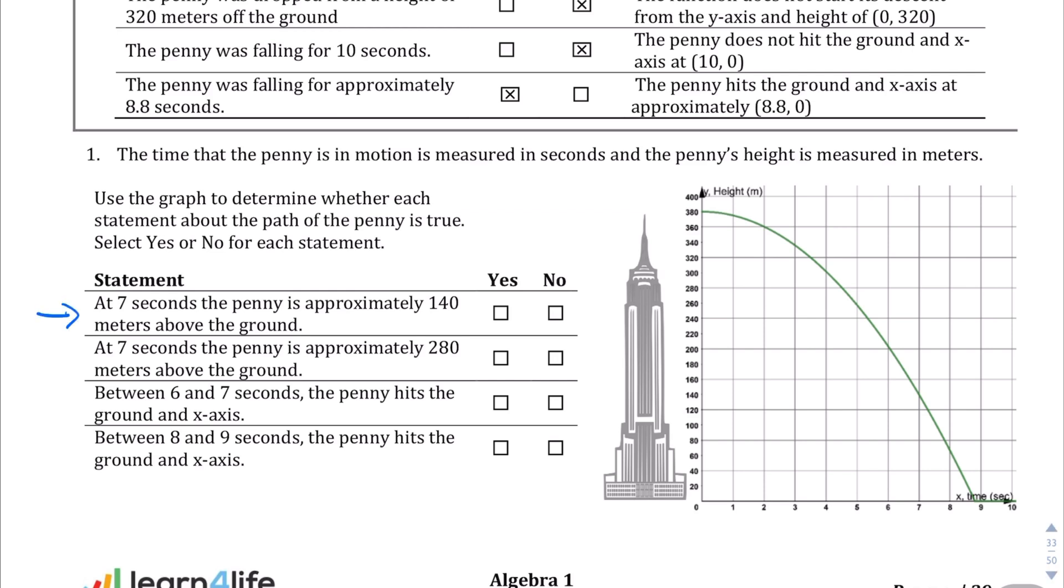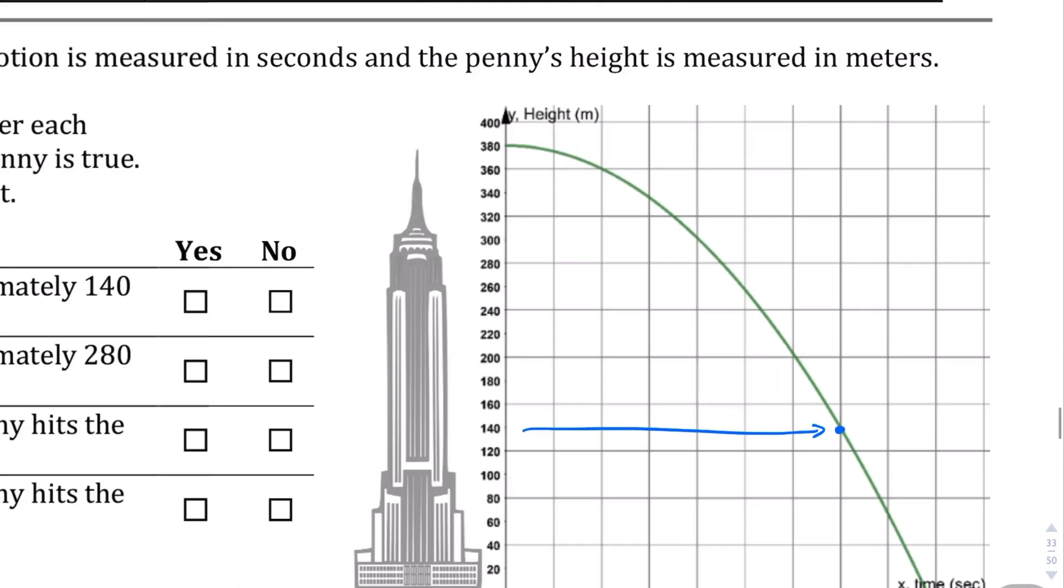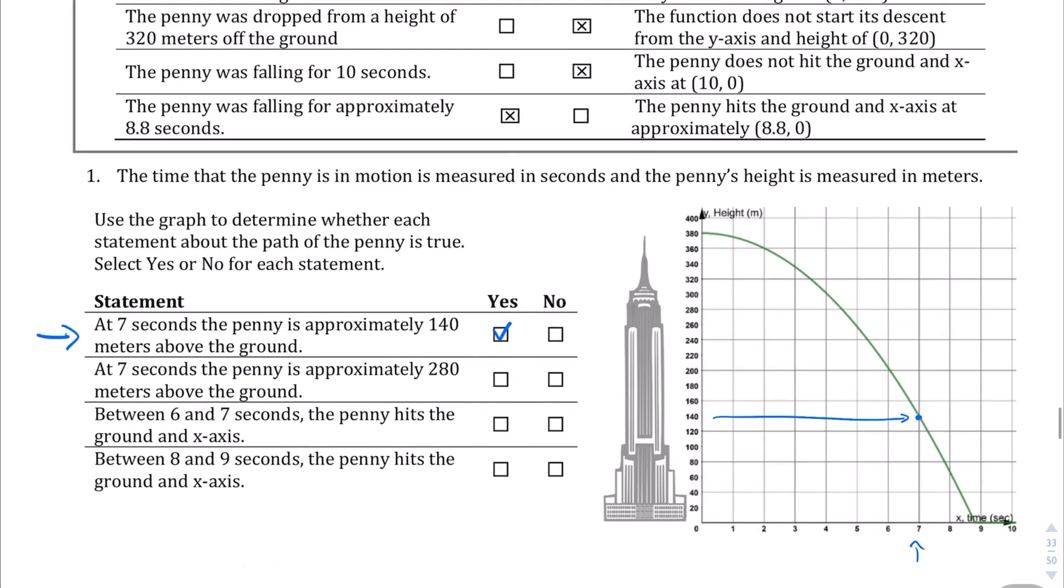Let's take a look at each statement and verify whether it's true or not. The first statement: at seven seconds the penny is approximately 140 meters above the ground. Well, let's take a look at seven seconds. How far is the penny off the ground? Right about here. Yeah, that looks right to me. It looks like 140 meters to me, so I'm going to say yeah, that's true. Next statement: at seven seconds the penny is approximately... well, we just verified that it's 140, so that's definitely no.